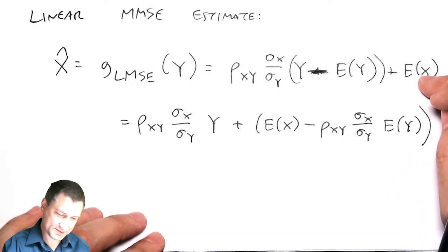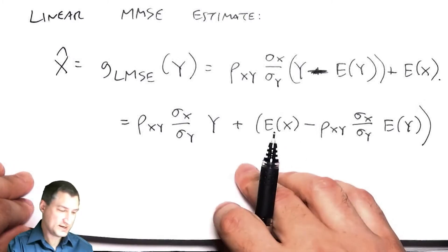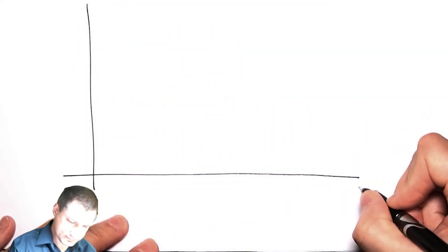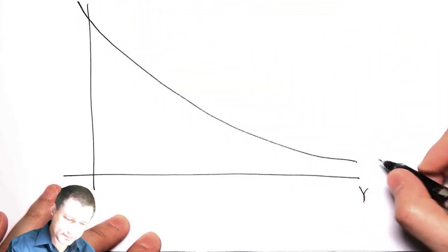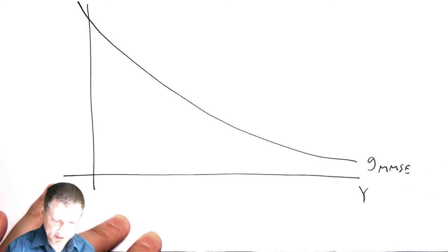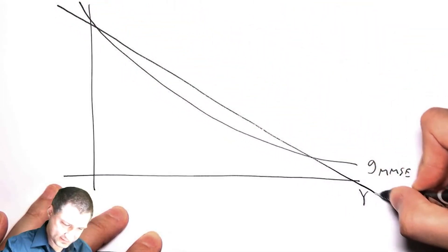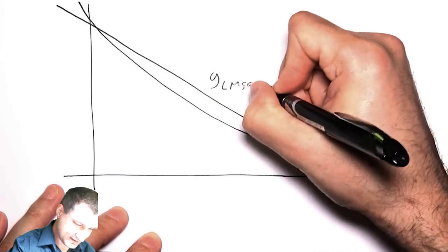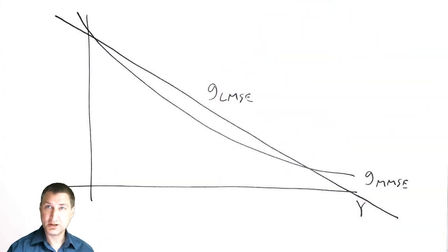So kind of what you see in practice is that in the best case what I want to do is take Y, and my MMSE may be some non-linear function. This is the expected value of X given Y. My LMSE is some kind of best line that's the best approximation to this non-linear function.